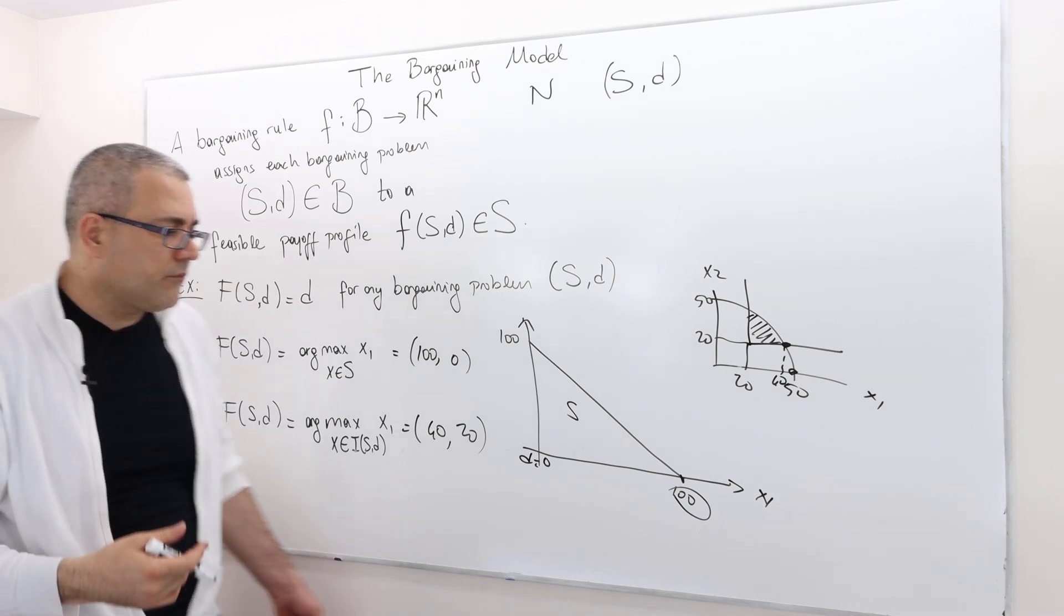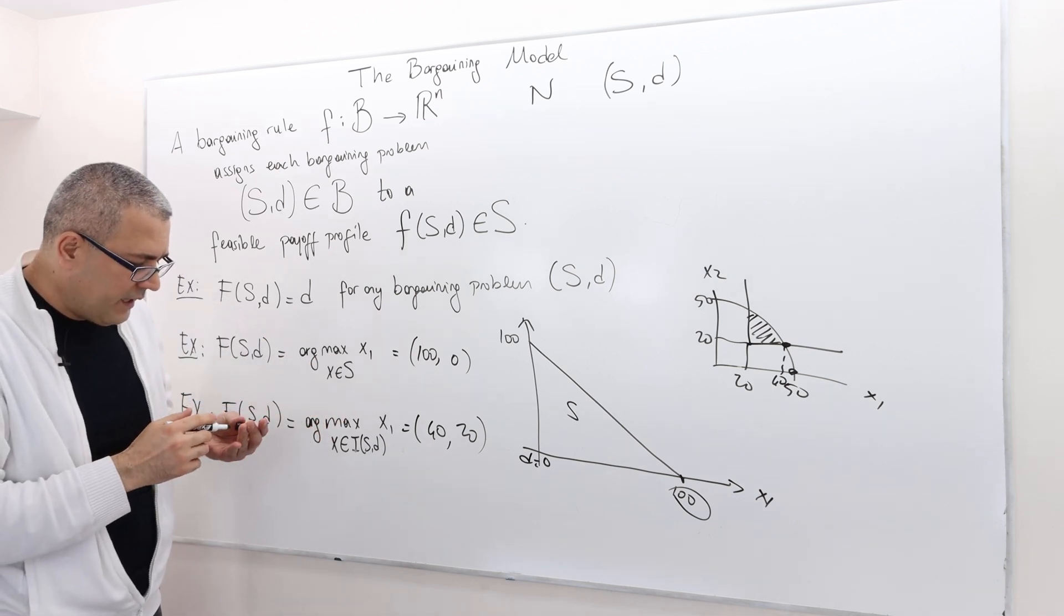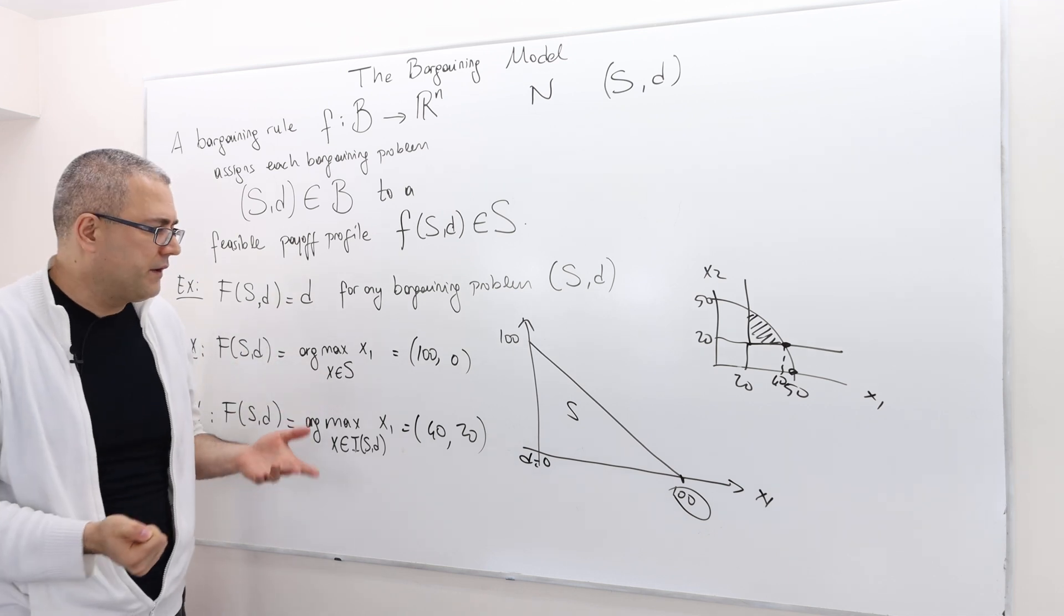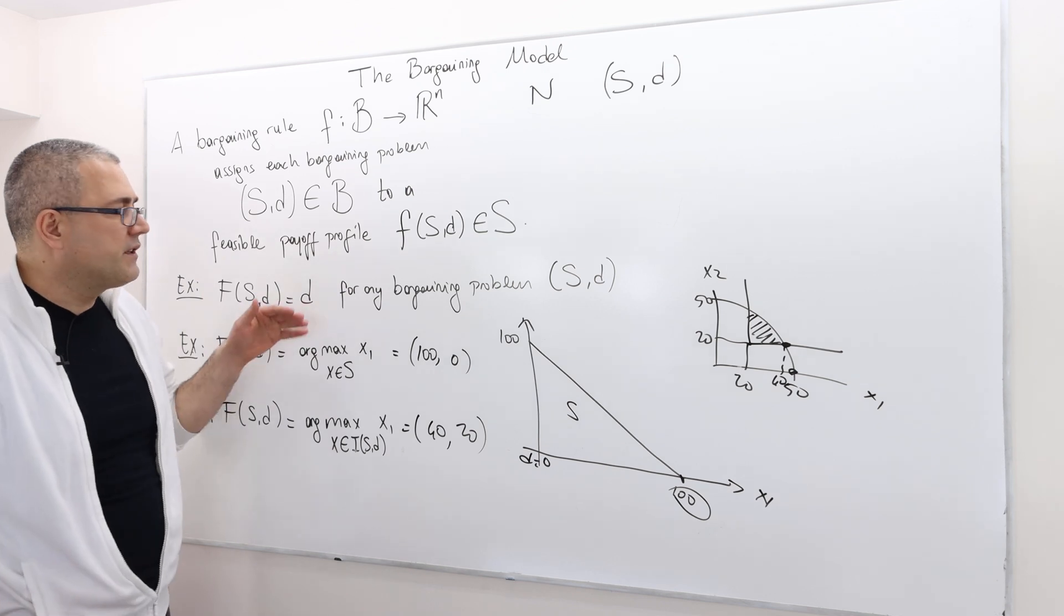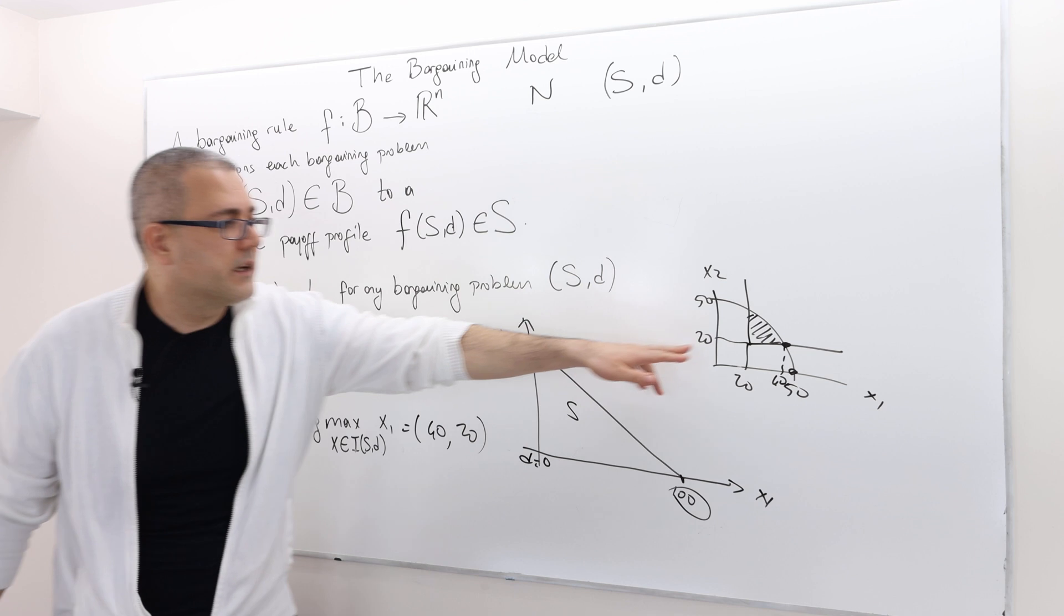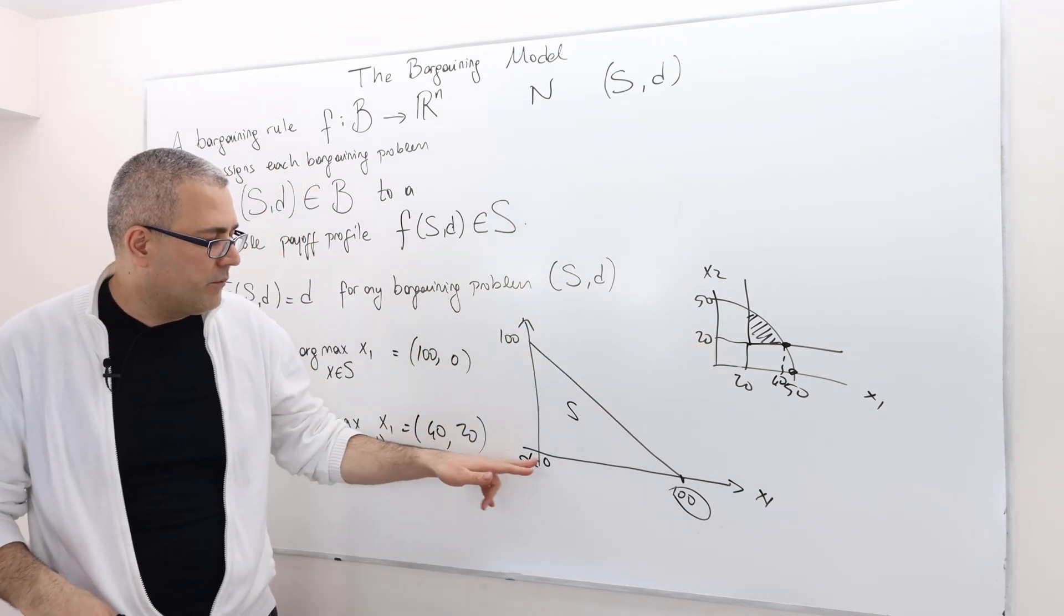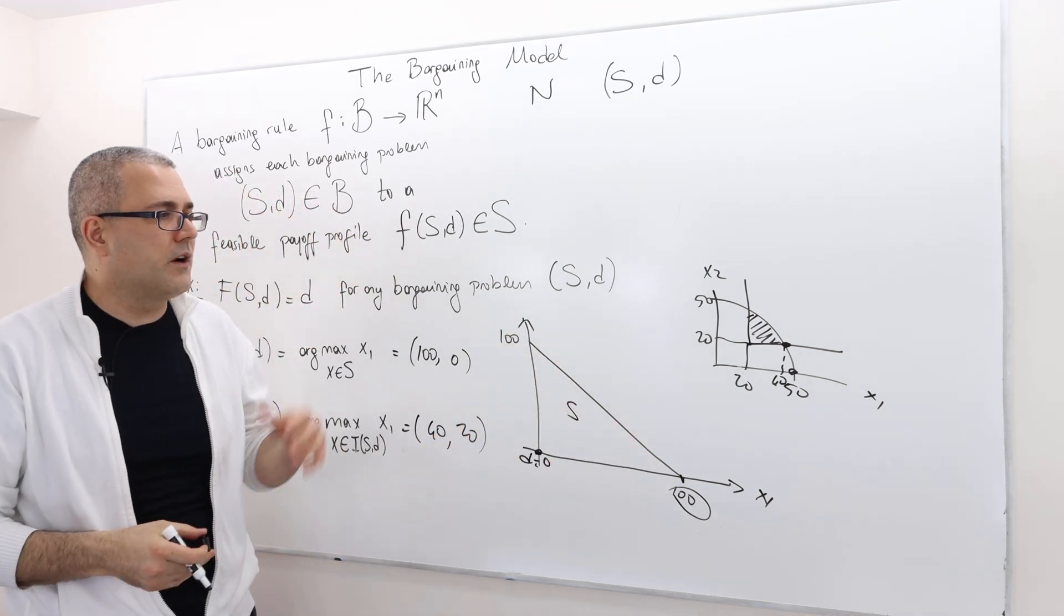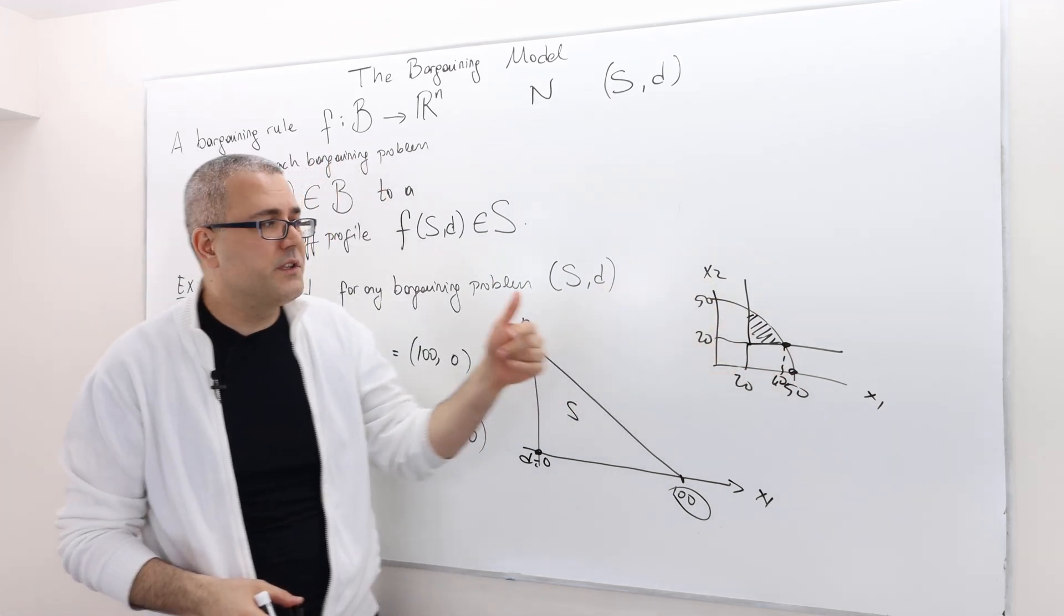So these are just three random rules I picked. Clearly, they have some nice properties and not so nice properties. So one of them, this one is individually rational. They're good, but it's clearly not efficient because d is not efficient. The boundaries are always efficient. Check out our earlier episodes. And here, the efficient outcomes are on the boundaries again.